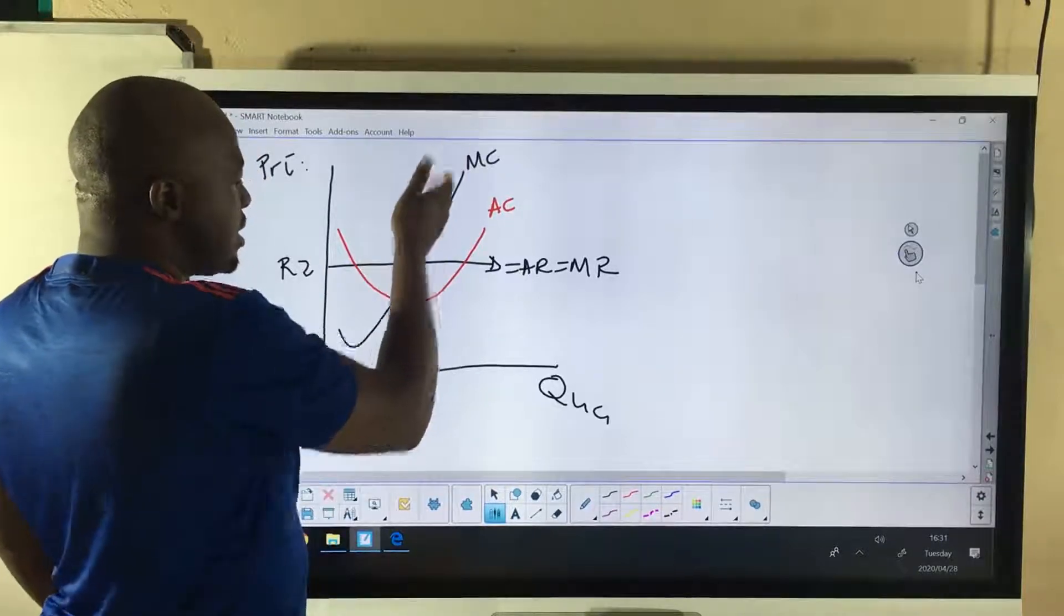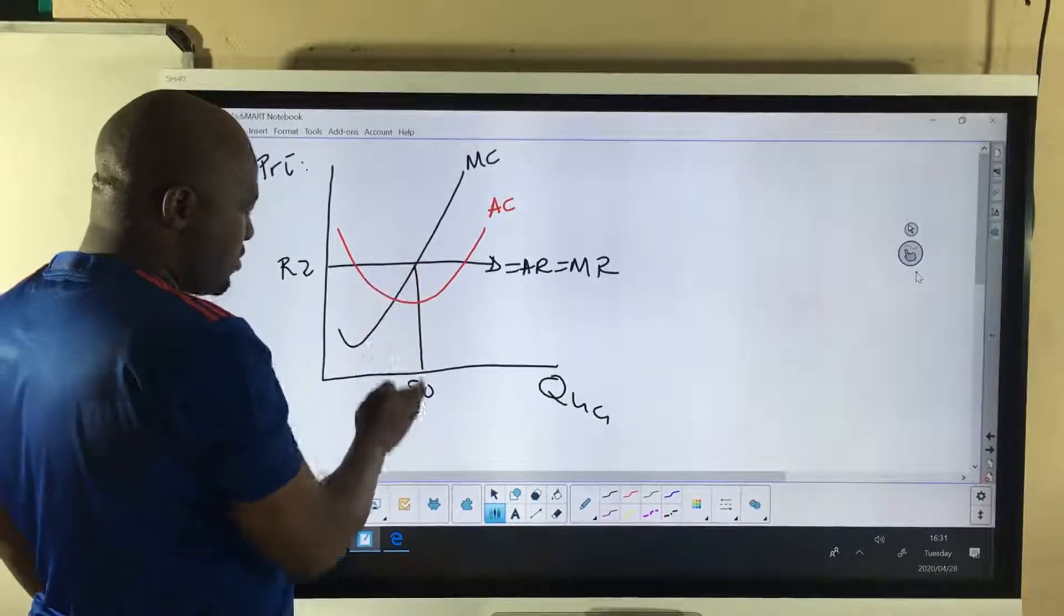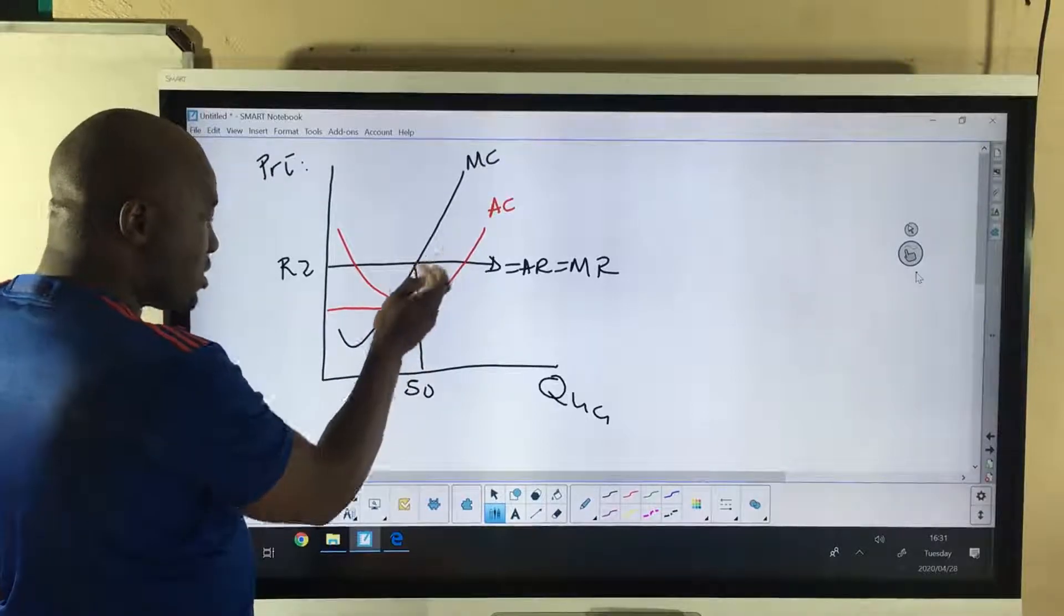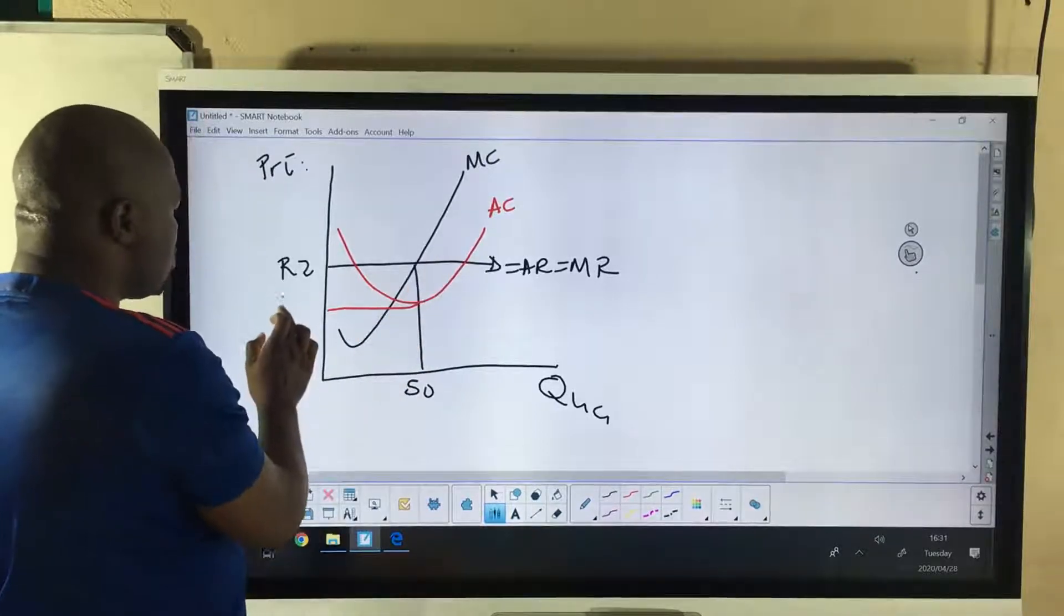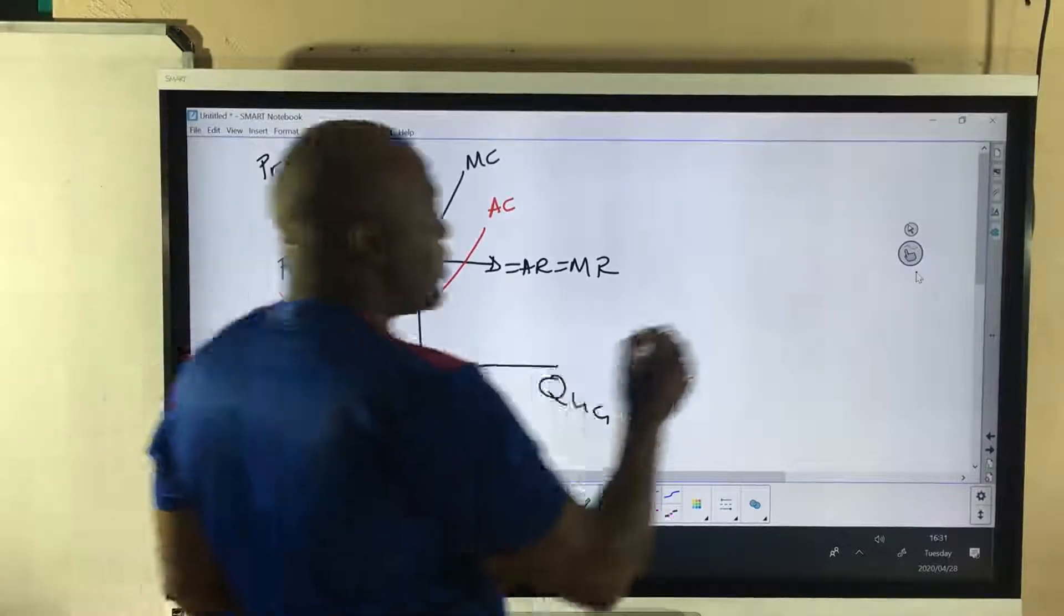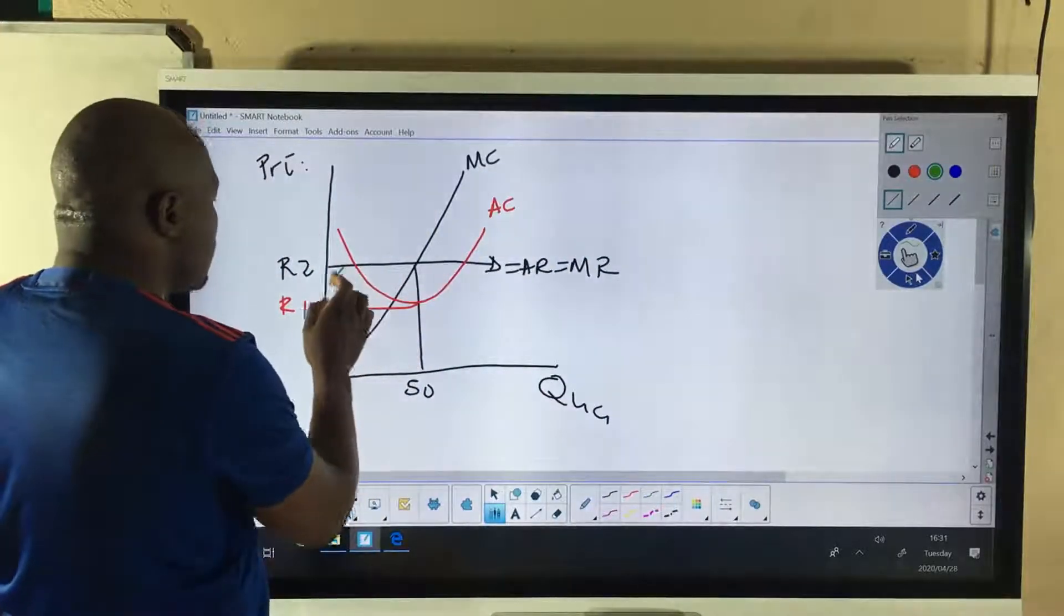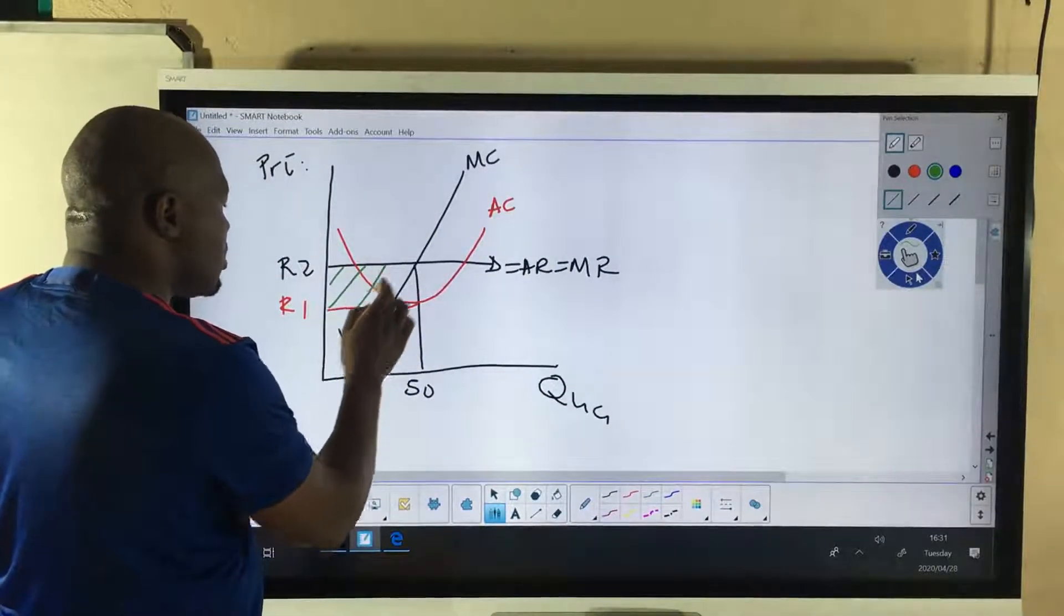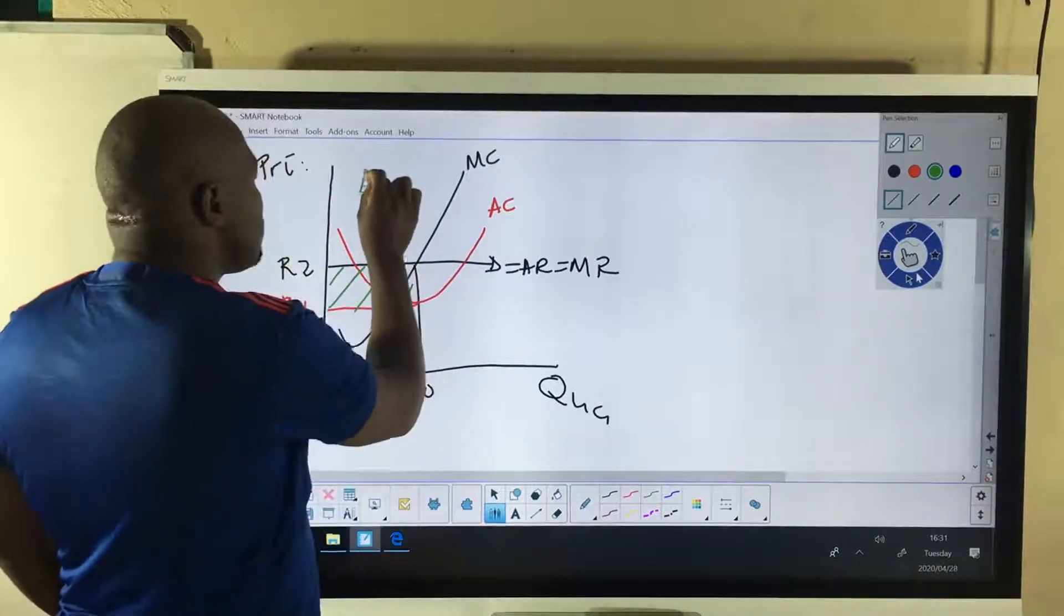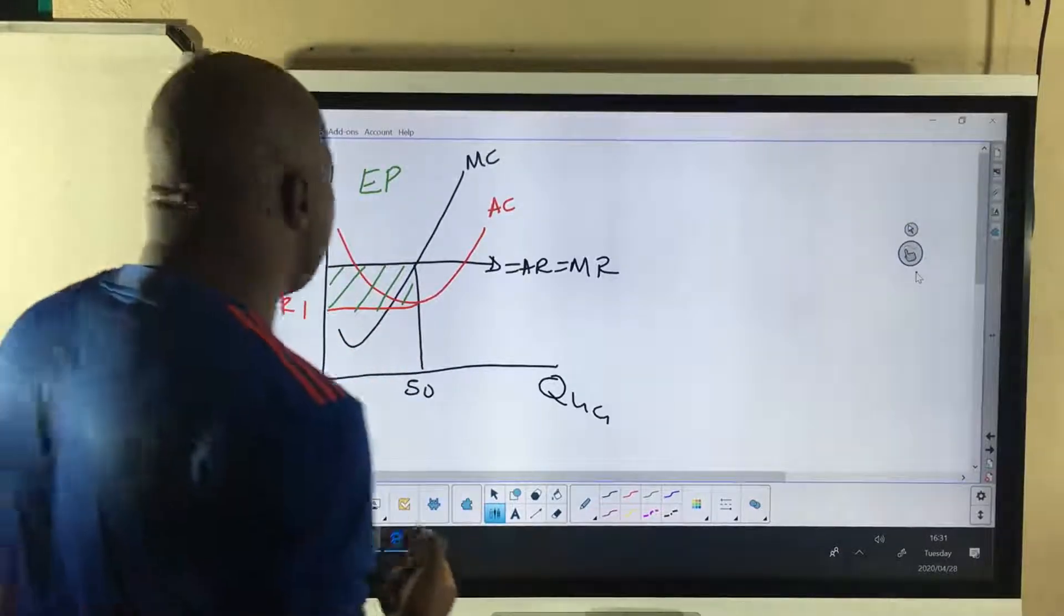And so this being our average cost at this output, you can see that we are making a profit. Of how much? We are making a profit. So we normally want to shade this one. So the shaded part represents our economic profit. And can you please prove that?